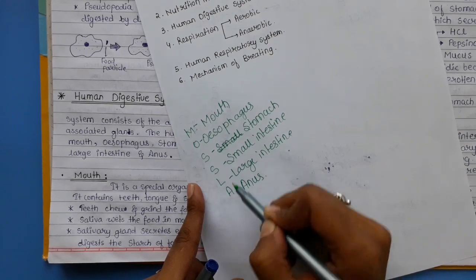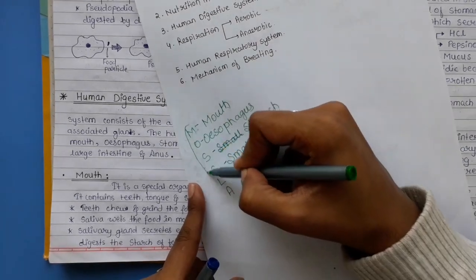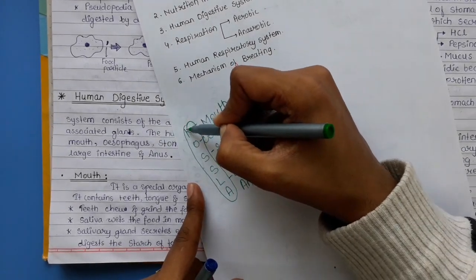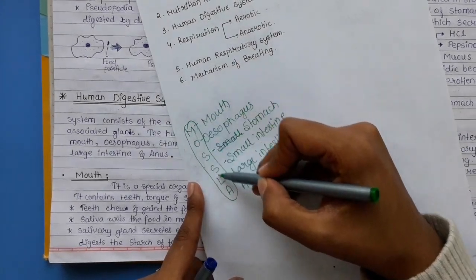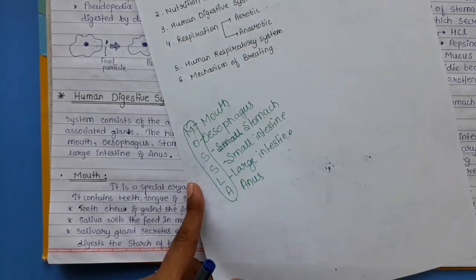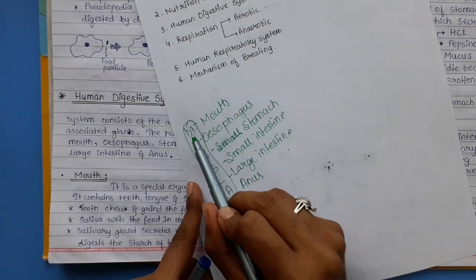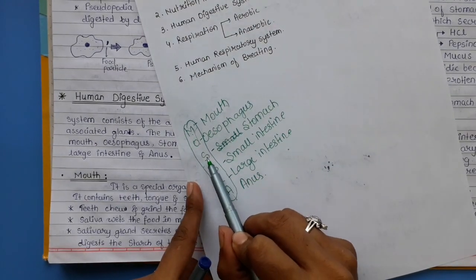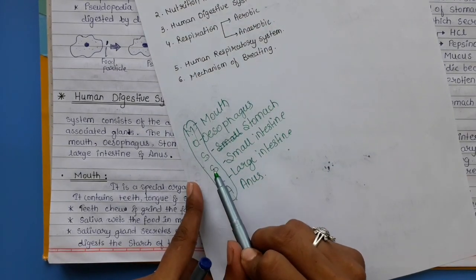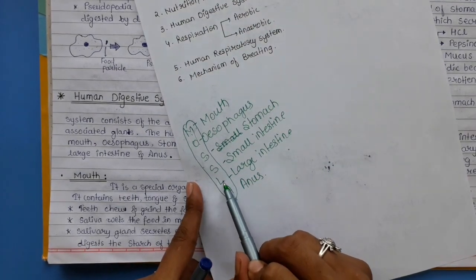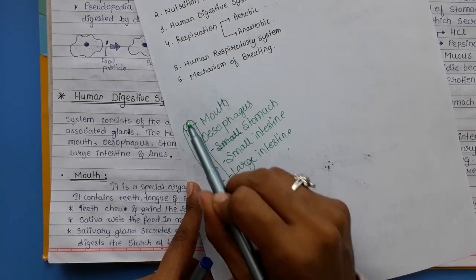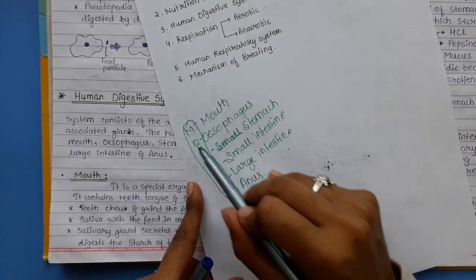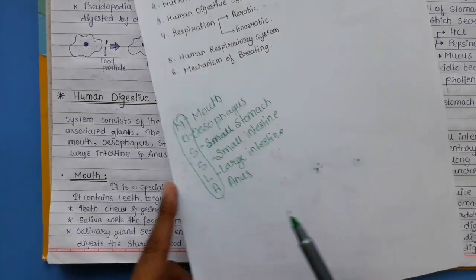The human digestive system consists of the alimentary canal and its associated glands. The six digestive organs are mouth, oesophagus, stomach, small intestine, large intestine, and anus — remember MOSSLA. We will cover each one in detail.